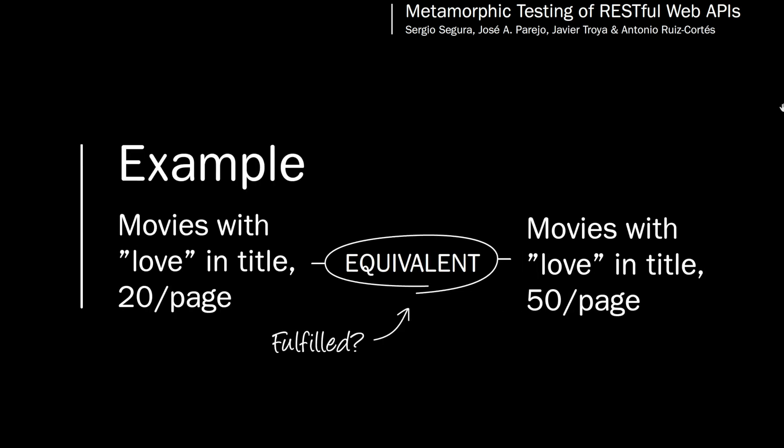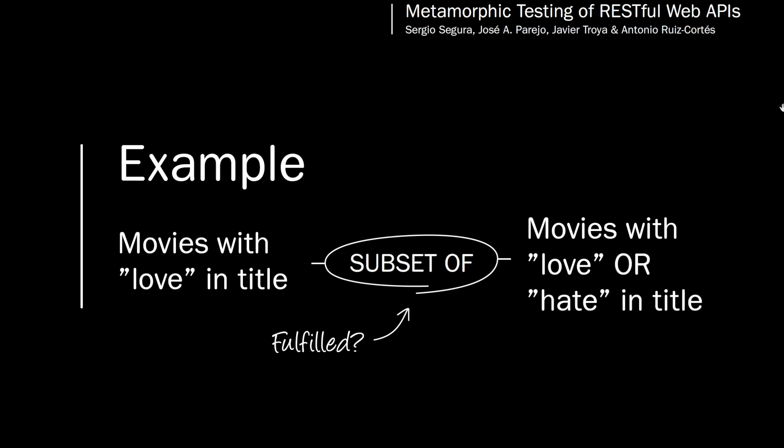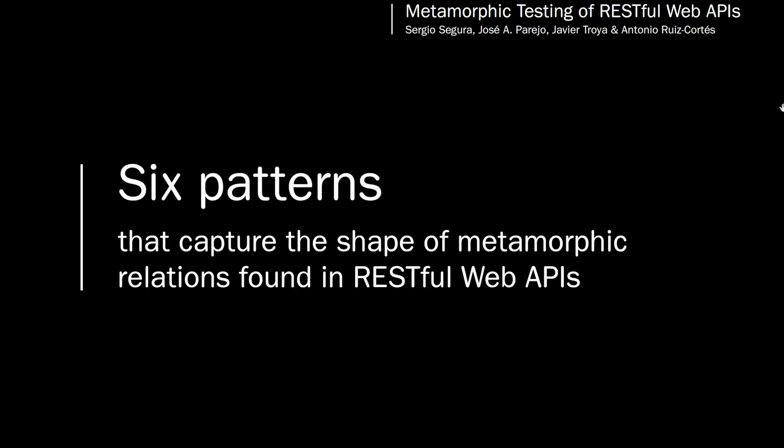For instance, the output for all movies with 'love' in the title should be the same regardless of the size of pagination. And the output for a search for movies with 'love' in the title should be a subset of the output for a search for movies with 'love or hate' in the title. The authors introduced six metamorphic relation output patterns that capture the shape of many metamorphic relations found in RESTful Web APIs.